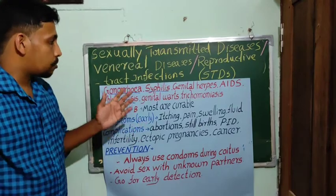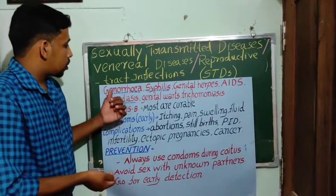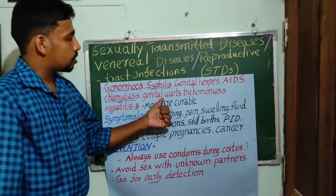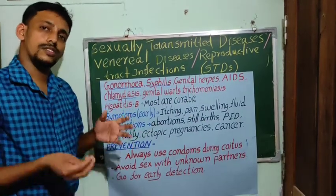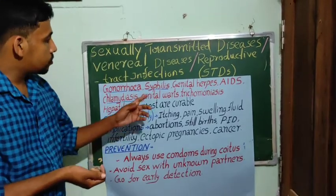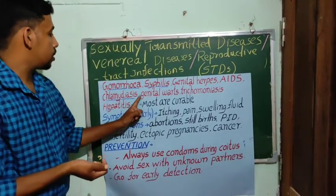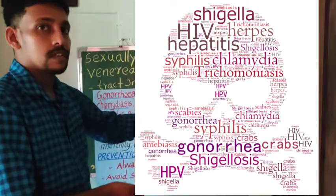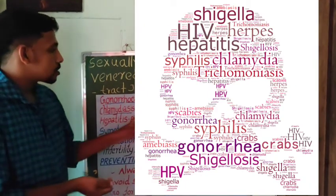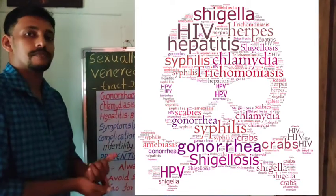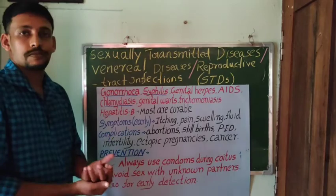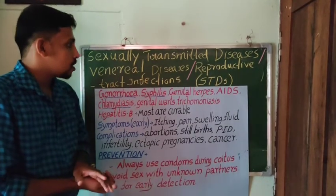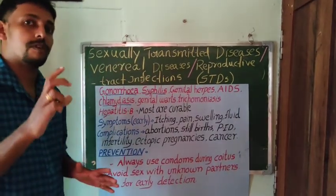There are a number of STDs. Some examples include gonorrhea, syphilis, genital herpes, AIDS, chlamydiasis, genital warts, trichomoniasis, and hepatitis B. Syphilis, chlamydiasis, and gonorrhea are caused by bacteria. Genital herpes, AIDS, genital warts, and hepatitis B are caused by viruses. Trichomoniasis is caused by a protozoan.